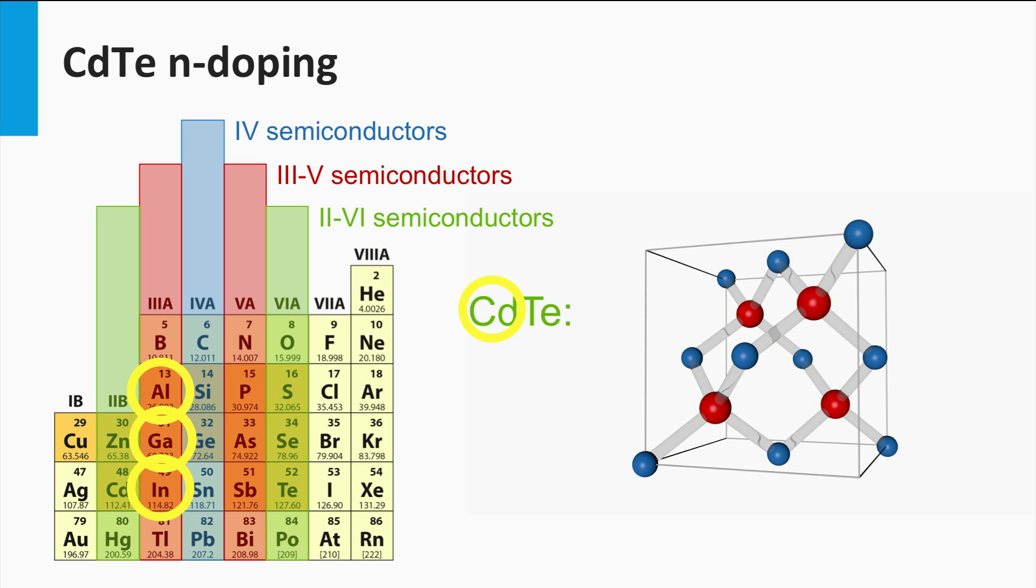N-doping of cadmium telluride can be achieved by replacing the two valence atom cadmium with a three valence electron like aluminum, gallium, and indium. These elements act as shallow donors.